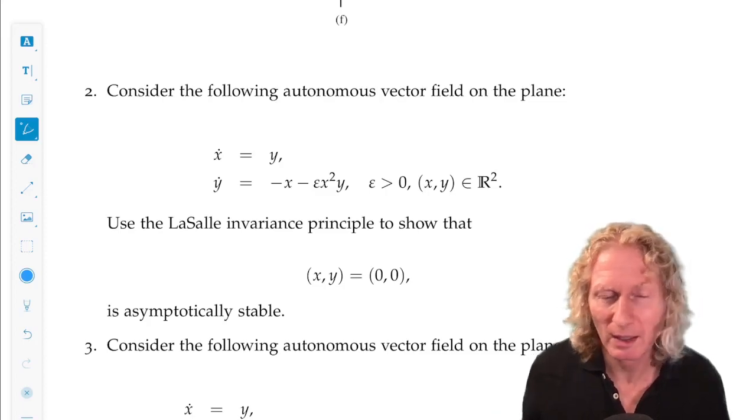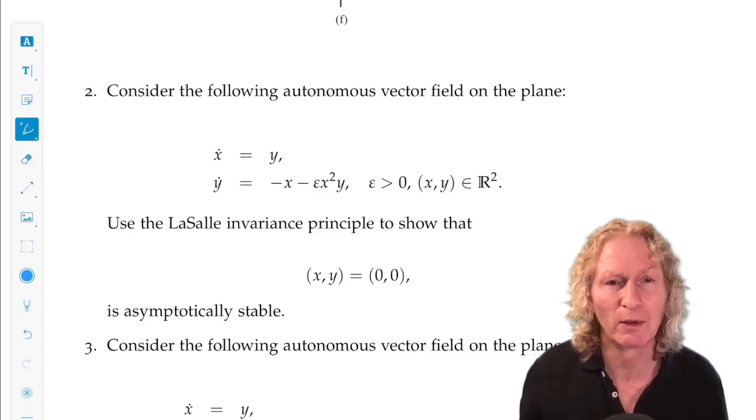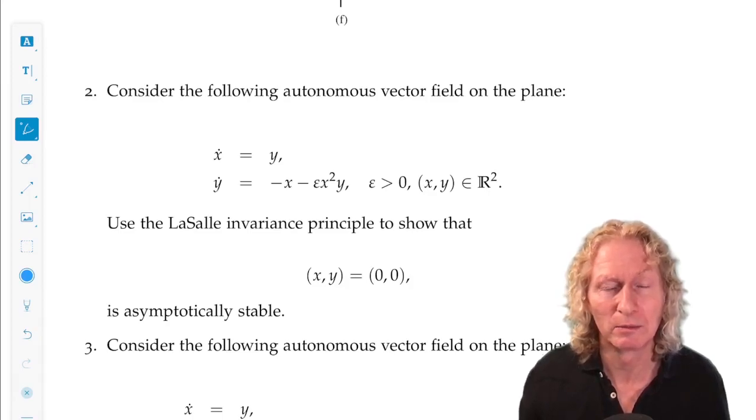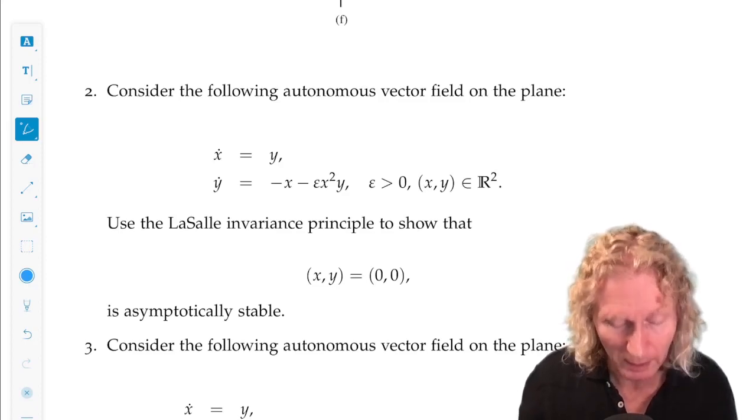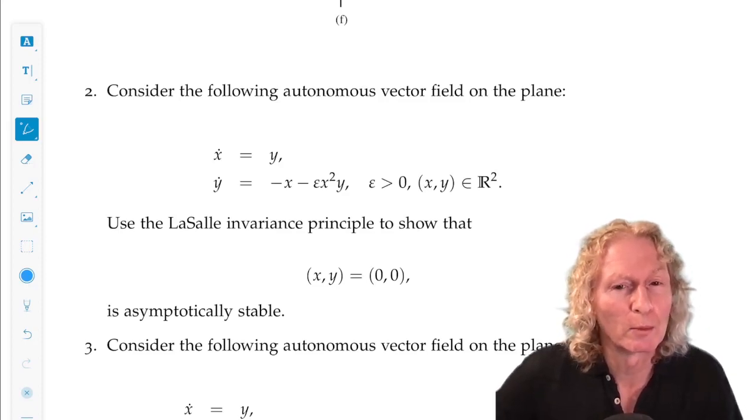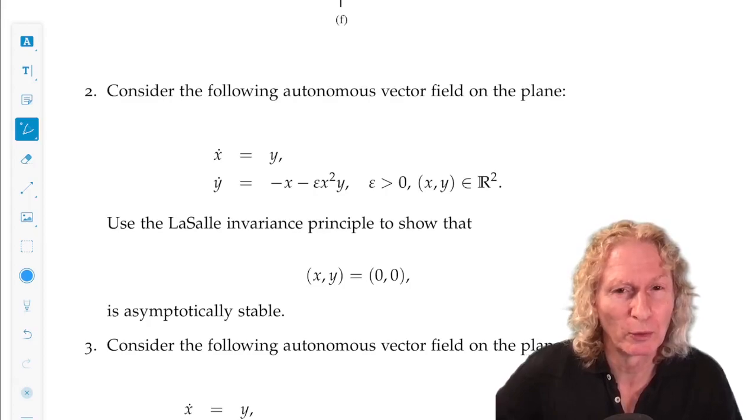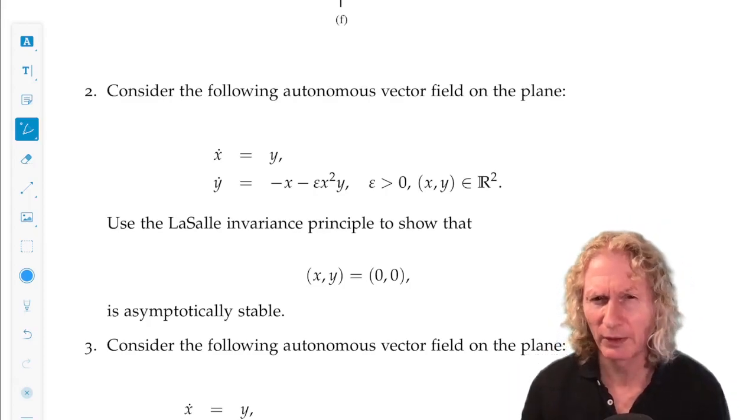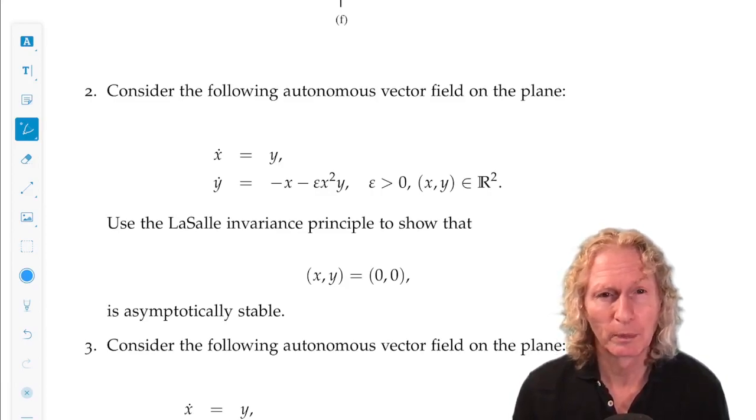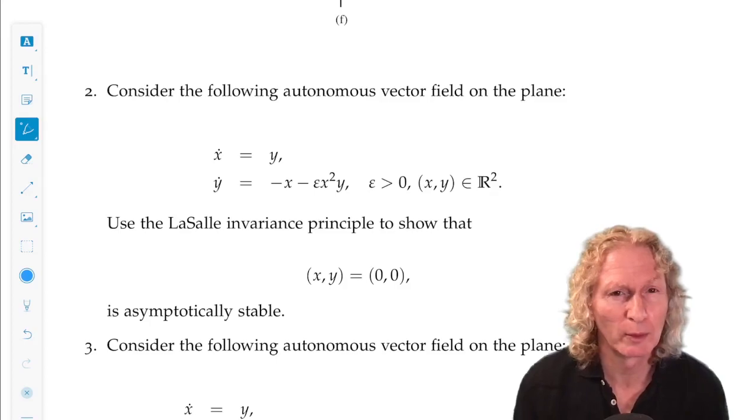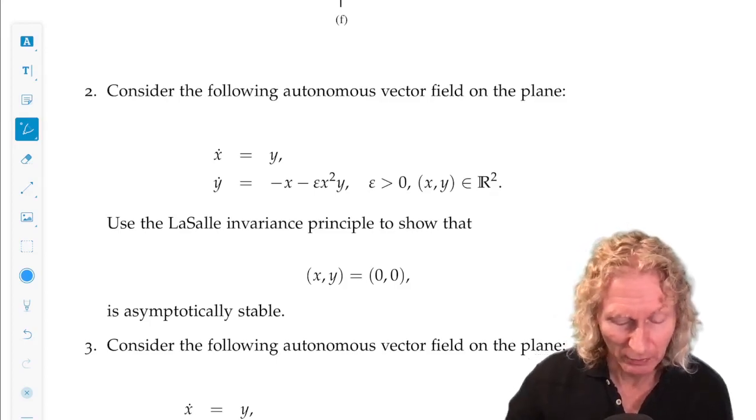So, you just set it up the usual way. You need to have this positive invariance set, and what would you use for V of X and Y? I would try 1 half X squared, 1 half times the quantity X squared plus Y squared. The same Lyapunov function that we used in arguing about Lyapunov's stability for this. This is a really nice problem.